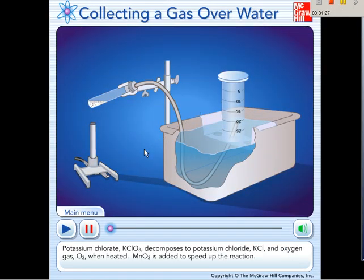Here we have an apparatus that shows a Bunsen burner. We're going to set up under a container of potassium chlorate. This is going to be heated up. Let's go ahead and watch what happens. Potassium chlorate, KClO3, decomposes to potassium chloride, KCl, and oxygen gas, O2 when heated. Manganese dioxide, MnO2, is added to speed up the reaction.